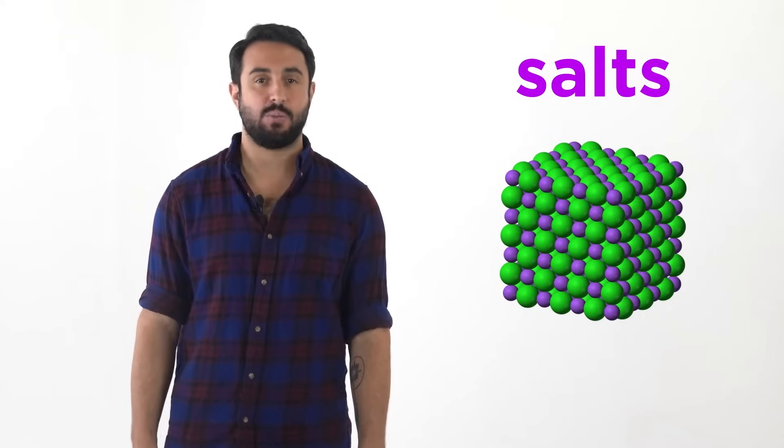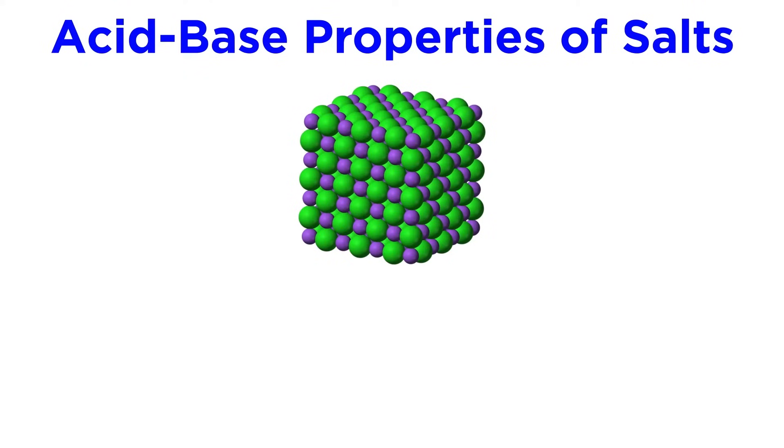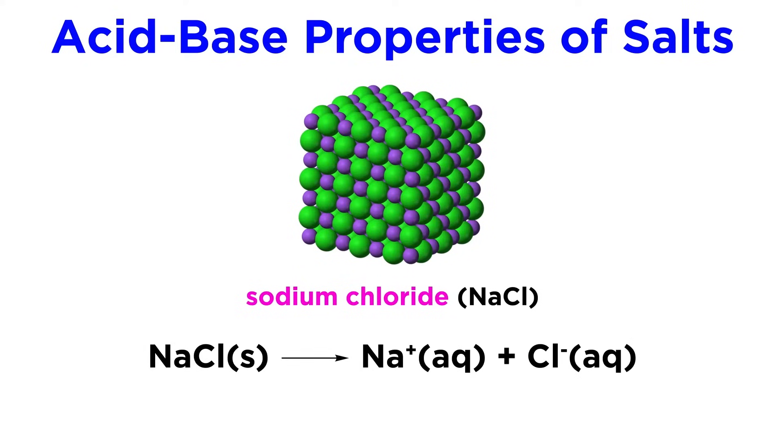Let's get a closer look at this. Sometimes the ions present in an ionic compound are totally neutral. An example of this would be sodium chloride. When this dissociates in aqueous solution, we get sodium cations and chloride anions. Neither of these exhibit any significant acidity or basicity, so there is no significant effect on the pH of the solution.